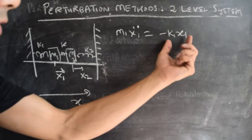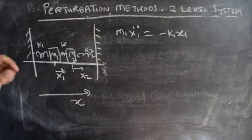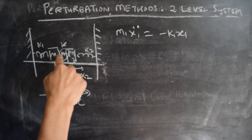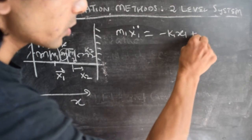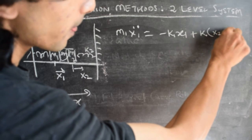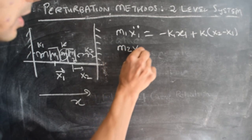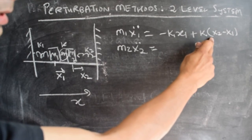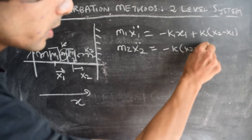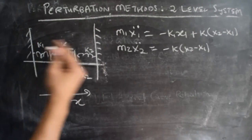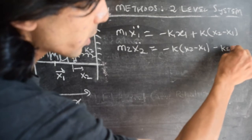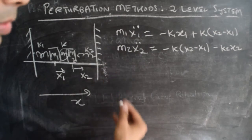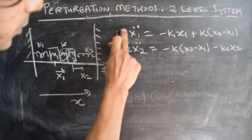If you stretch m1 by amount x1, spring k1 pulls it back by force k1*x1 in the negative x-direction. The net stretching of the coupling spring between m1 and m2 is x2 minus x1, which adds a force kappa*(x2 - x1) in the positive x-direction. For the second mass: m2 x2-double-dot equals minus kappa*(x2 - x1) minus k2*x2, where the coupling spring pulls it back along with spring k2. We can now write the right-hand side in matrix form.